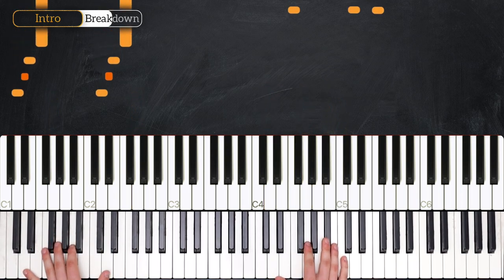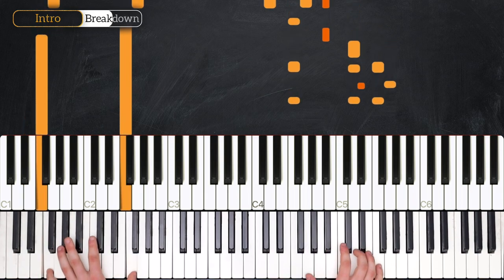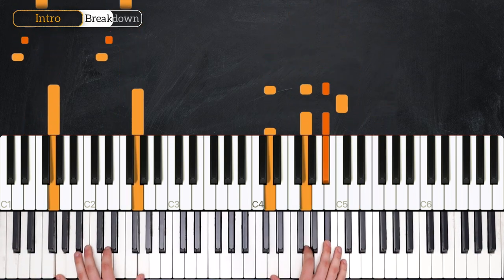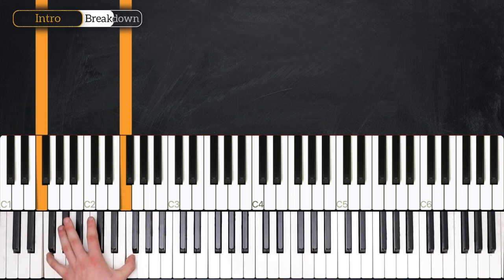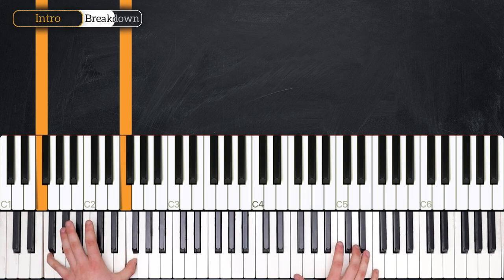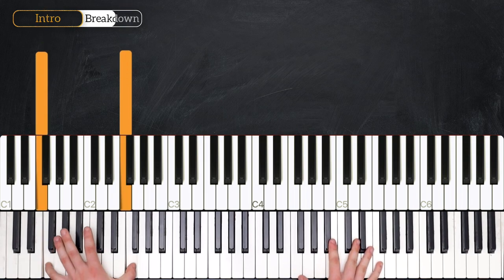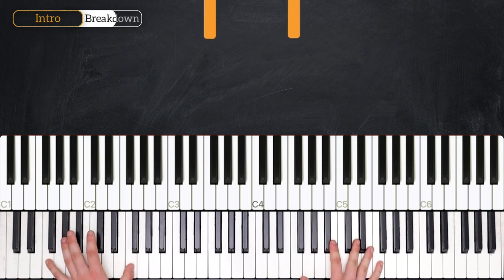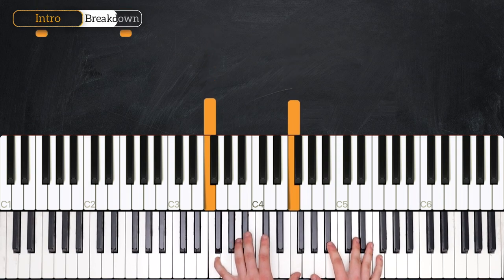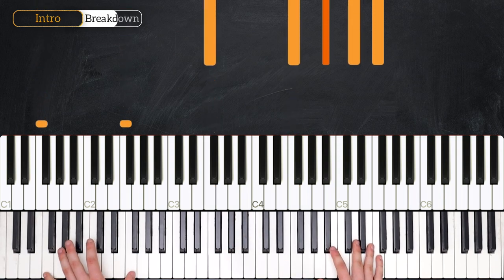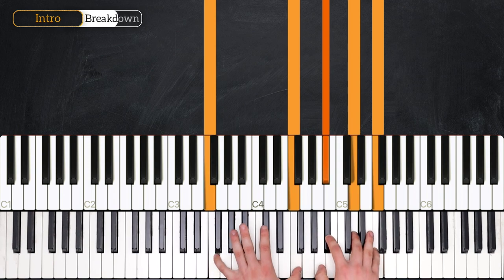The same thing then repeats. Now in this bar we land on the F and instead of doing our same thing that we did with the arpeggiation of the B flat major chord, we play this low F, then we jump all the way up here and play the same F octave, we're just playing it higher up.